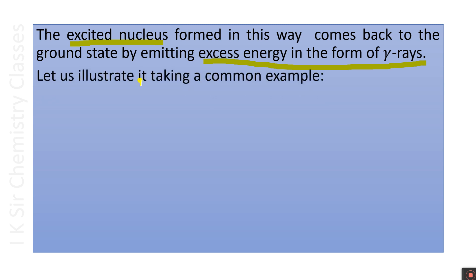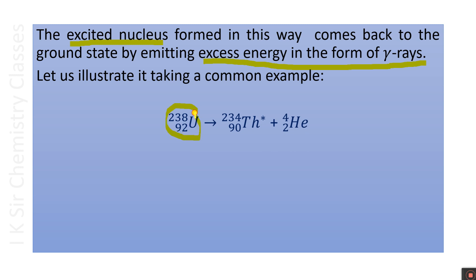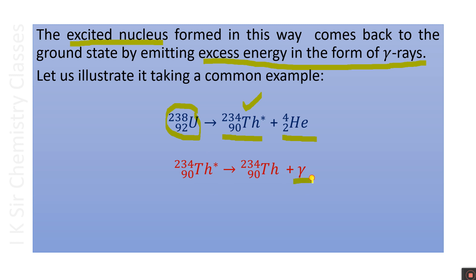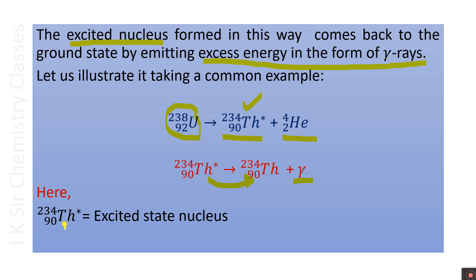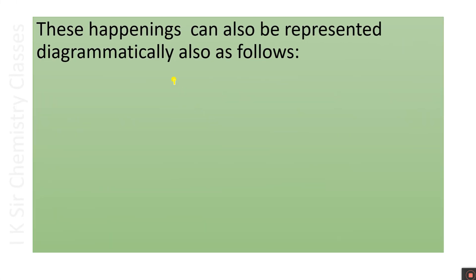Let us illustrate it with a common example. Uranium-238 nucleus is radioactive. It emits an alpha particle forming thorium-234 nucleus. This nucleus is in the excited state. It emits the excess energy in the form of a gamma ray and comes to the ground state. Here, thorium-234* is the excited nucleus and thorium-234 without asterisk is the ground state nucleus. The notation asterisk is used for the excited nucleus.